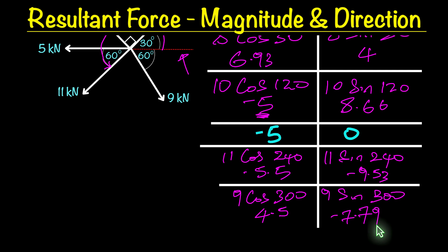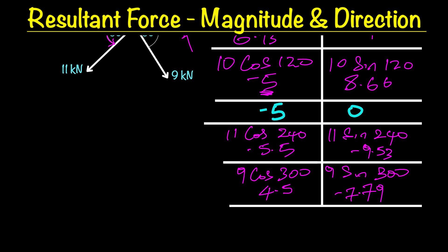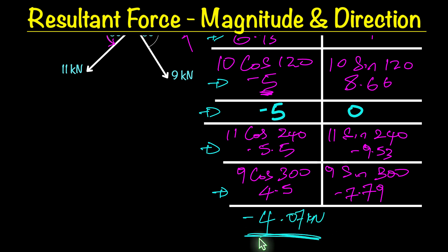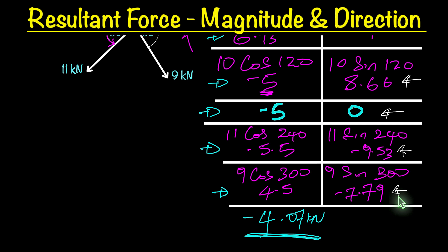Now we're going to sum these up to get the totals for the vertical and horizontal force components. For horizontal components, summing 6.93, negative 5, negative 5, negative 5.5, and 4.5 gives us a total of negative 4.07 kilonewtons. For the vertical force components, summing 4, 8.66, 0, negative 9.53, and negative 7.79 gives us negative 4.66 kilonewtons.